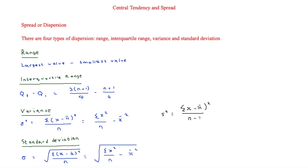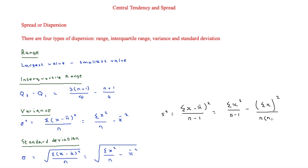For the sample variance, the divisor is n − 1. The alternative form is: sum of x² / (n − 1) minus (sum of x)² / (n × (n − 1)), since sum of x / n gives the mean. That's how you compute the sample variance.